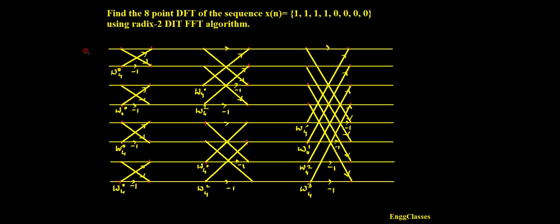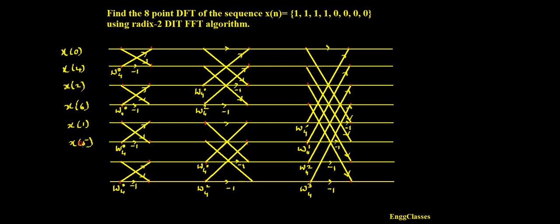First I need to insert the input. The input is in bit-reversed order. That means this is x[0] and this is x[4], and in this way it continues: x[2] and x[6], then x[1] and x[5], then x[3] and lastly x[7]. So we need to insert the input in bit-reversed order. And the output is the DFT which is in normal order.